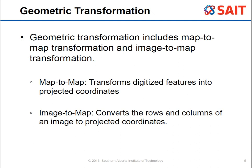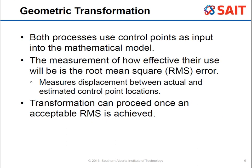The geometric transformation includes two kinds: map-to-map and image-to-map. A map-to-map transformation takes a scanned map and transforms it into coordinates. Image-to-map takes a satellite or aerial image and converts all the rows and columns to a projected coordinate system.